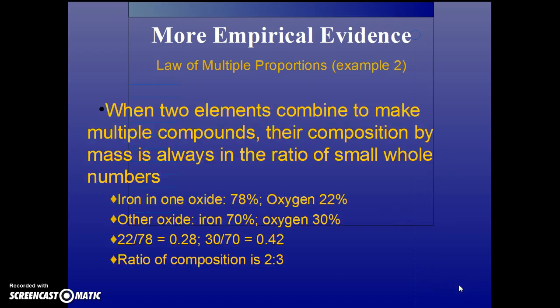There's another example. Iron and one oxide - 78% iron and 22% oxygen. And the other, 70% iron, 30% oxygen. The ratio of that composition is 2 to 3, a small whole number, suggesting that atoms combining in different ways are producing these two different compounds.